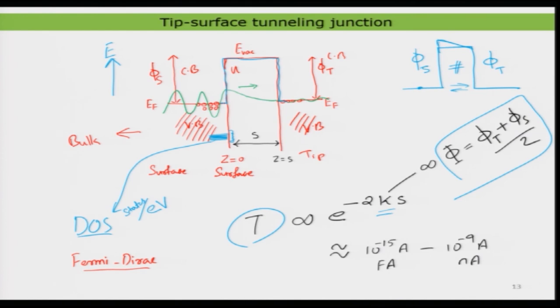What I want to show in this slide is the origin of the real barrier in our context — the tip and the surface. The barrier arises because the materials have defined work functions, and those work functions give rise to this kind of barrier. Once you have the barrier, the electrons cannot simply transfer to the next electrode — they need to undergo something called the tunneling phenomenon.